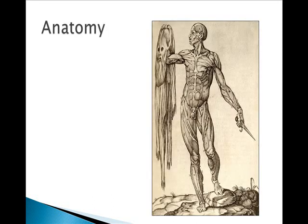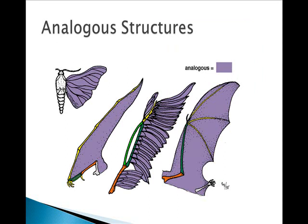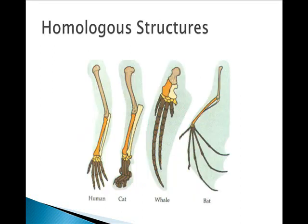Anatomy is another area where we use evolutionary thought. Studying comparative anatomy can help biologists identify interrelatedness. For example, analogous structures don't show common ancestry, but they do show common functions — like the wing of a moth, a pteranodon, a bird, and a bat; they are not from the same lines. But homologous structures show common ancestry, though they may have been modified over time. You can see that the bones are identical — they've just taken on different shapes in each line.